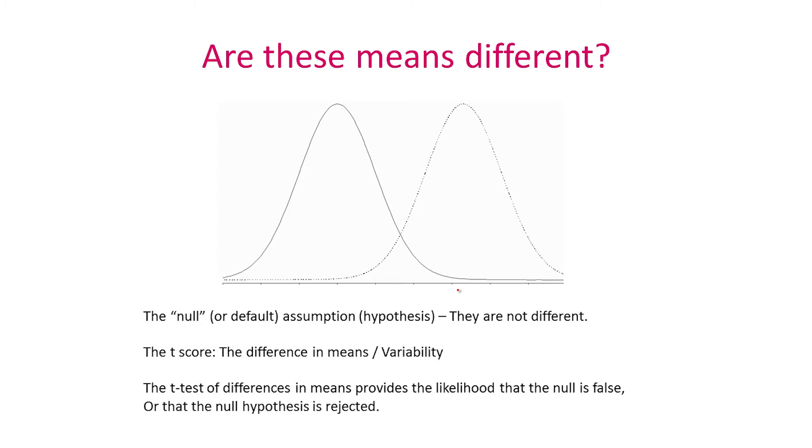Every time we test a question like this in the design of experiments, the null or the default assumption is that they are not different. So we start off with the belief, with the assumption that the two means are not different, and we use a test statistic called the t-score, which roughly is an index which computes the ratio of the difference in the means divided by the variability. The higher the t-score, the greater the likelihood that these two means are actually different.